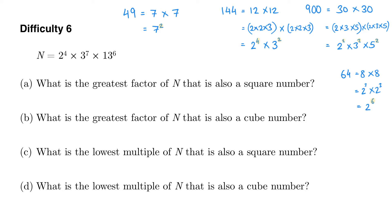We're going to use this fact to answer the questions. The greatest factor of n that is also a square number needs to have only even indices, and none of the indices can exceed what we've got for these prime factors as they stand. So the greatest factor of n that will also be a square number will be 2 to the power of 4 times 3 to the power of 6 times 13 to the power of 6. I need only these prime factors with even indices as large as possible. I can have 4; I can't have 7 because it's odd, but the greatest even number less than 7 is 6, and I can have 6 for my 13.